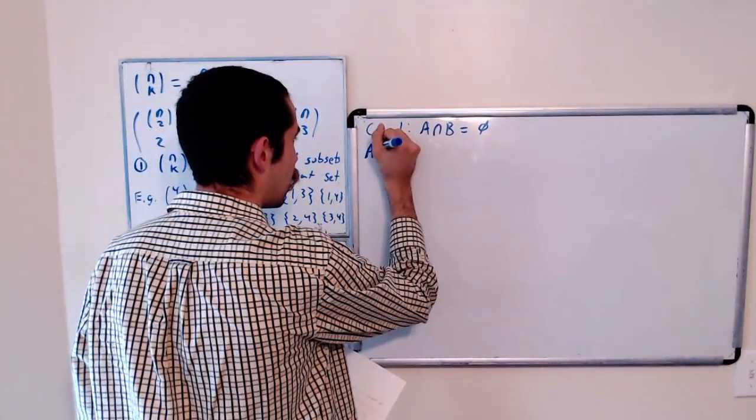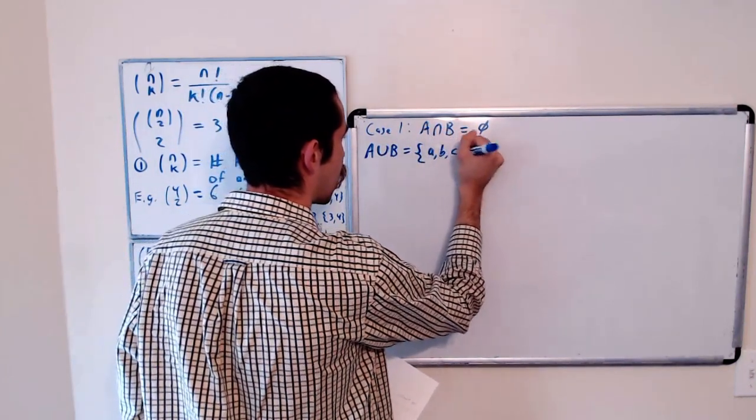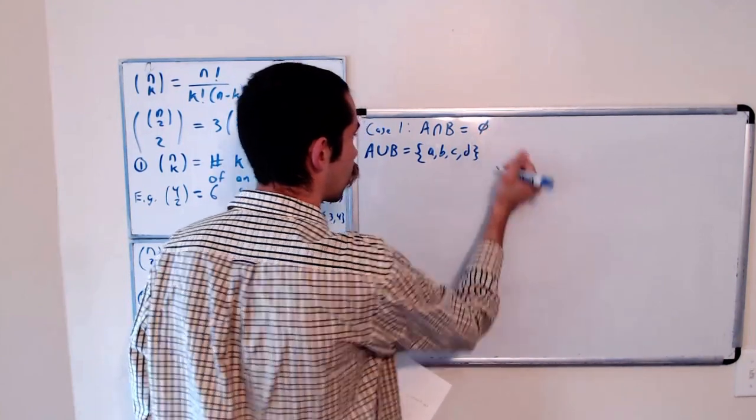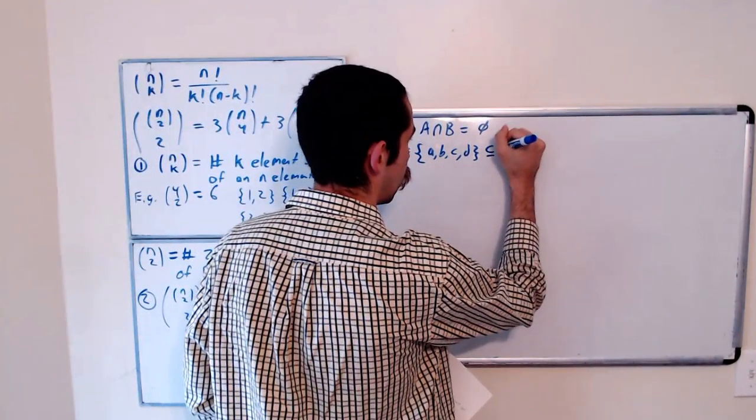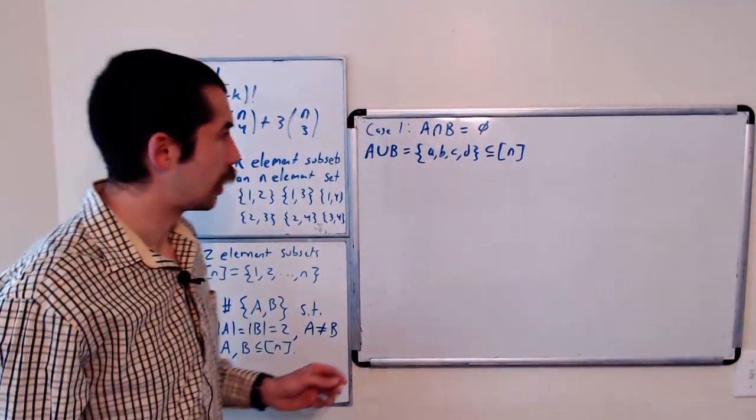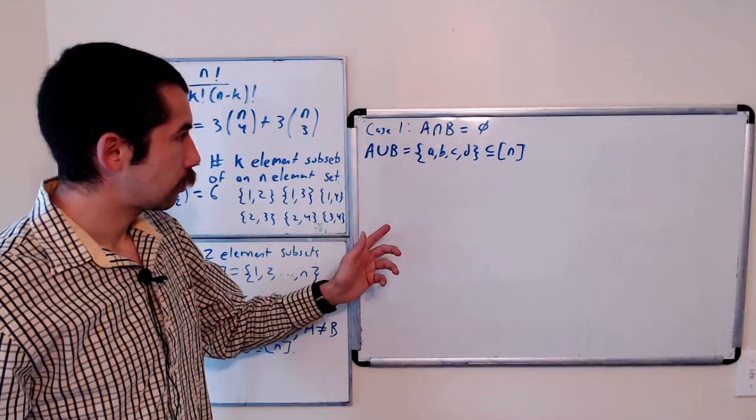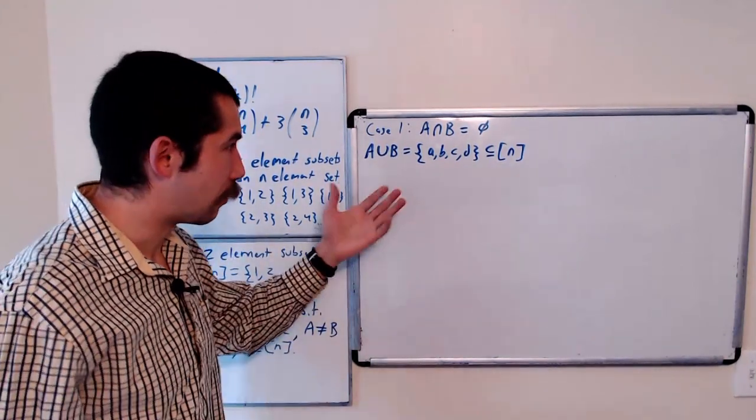So if a intersect b is the empty set, a union b is equal to, well, let's just call it a, b, c, d. It's going to be 4 elements. Because there's no intersection. It's a subset of n.